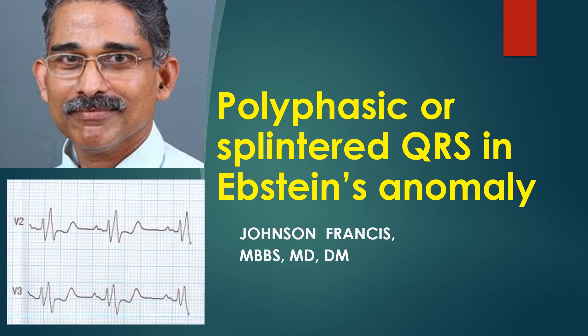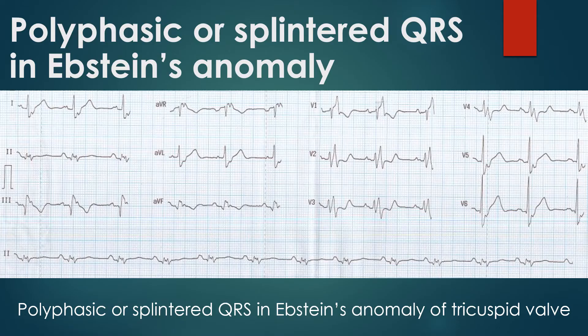Polyphasic or splintered QRS in Ebstein's anomaly of the tricuspid valve. The ECG shows a right bundle branch block pattern with polyphasic and splintered QRS. Lead V2 shows an RS-RS pattern mimicking right bundle branch block, with multiple small deflections — i.e., splintered QRS. Slurred S-wave in lateral leads also forms part of the RBBB pattern.